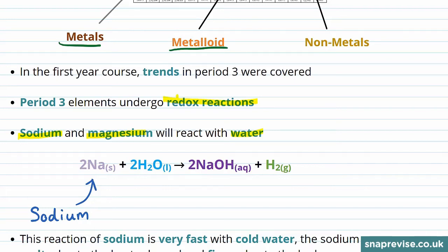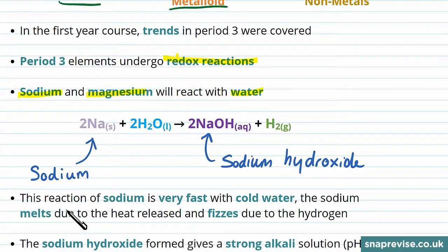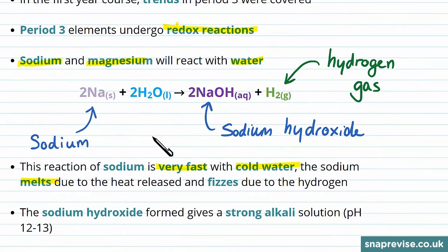One of the things we'll notice about this reaction is that it fizzes, also called effervescence, and that's because of the hydrogen gas that is produced in the reaction. This is a violent reaction and happens very quickly, even with cold water, and the sodium metal will melt due to the heat that is released in this very exothermic reaction.